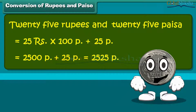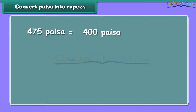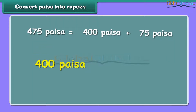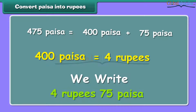Amazing! So much money! It's time to convert paisa into rupees. 475 paisa is equal to 400 paisa plus 75 paisa. As we know, 400 paisa is equal to 4 rupees. Therefore, we can write it as 4 rupees and 75 paisa.